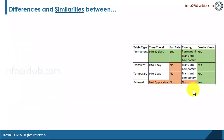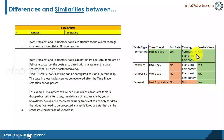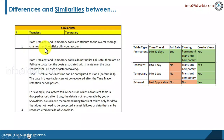Now let's see the similarities. Referring to the matrix, both transient and temporary tables contribute to the overall storage charges that Snowflake bills your account. From the billing and storage point of view, they still use space, and whatever space you are using you have to pay for.